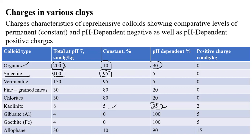Why does smectite show 95% constant charge and 5% pH-dependent, while kaolinite shows the opposite pattern? Can anyone answer?